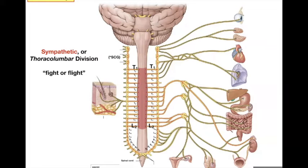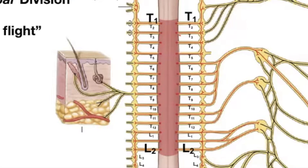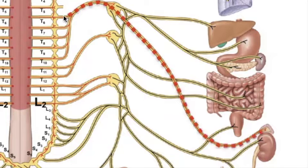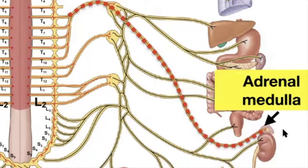Remember, you had these sympathetic chain ganglia or the prevertebral ganglia where you had short preganglionic fibers and long postganglionic fibers. The one exception was that one long preganglionic axon — a myelinated one — connected directly to the adrenal medulla, that particular spot in the middle of the adrenal gland.